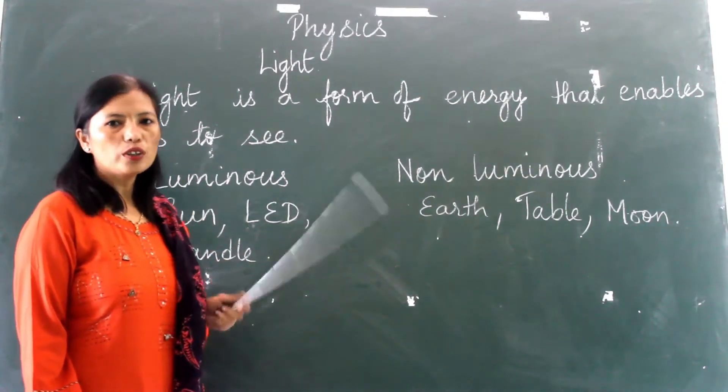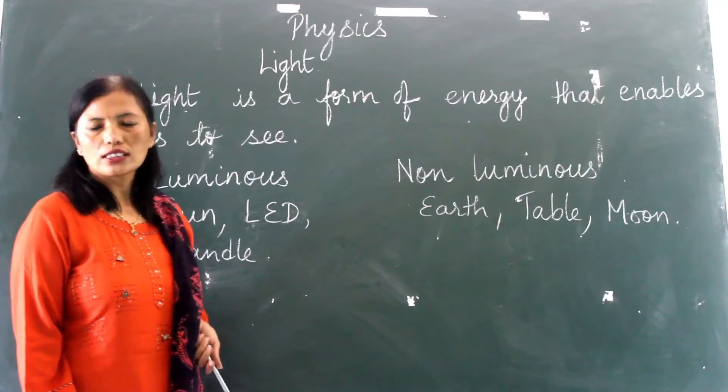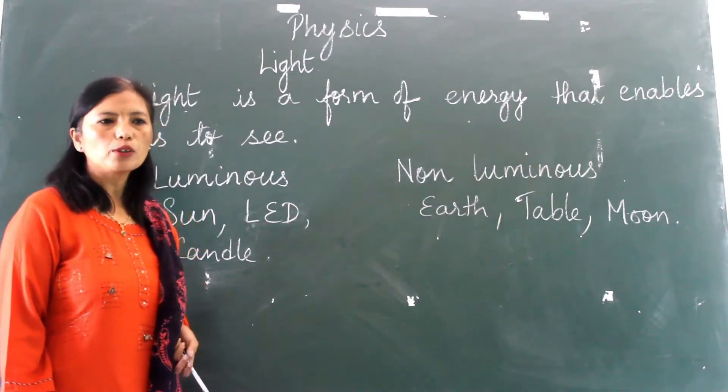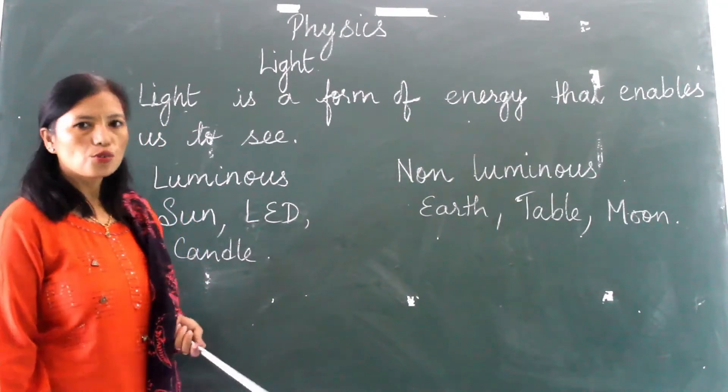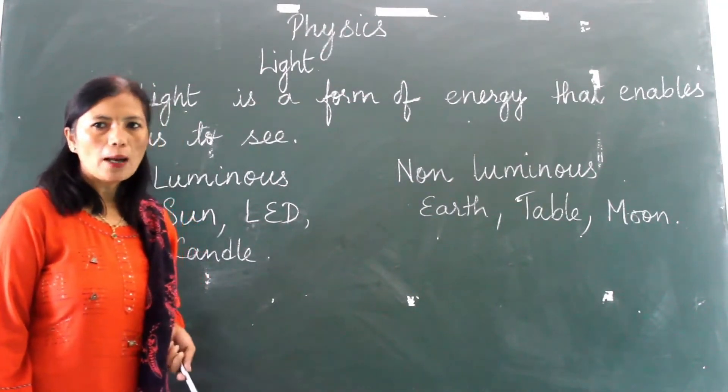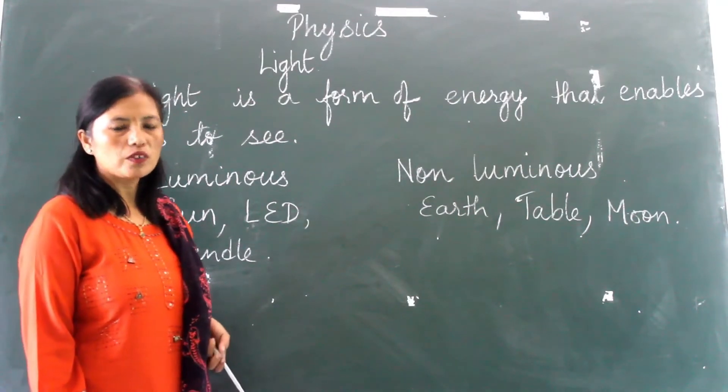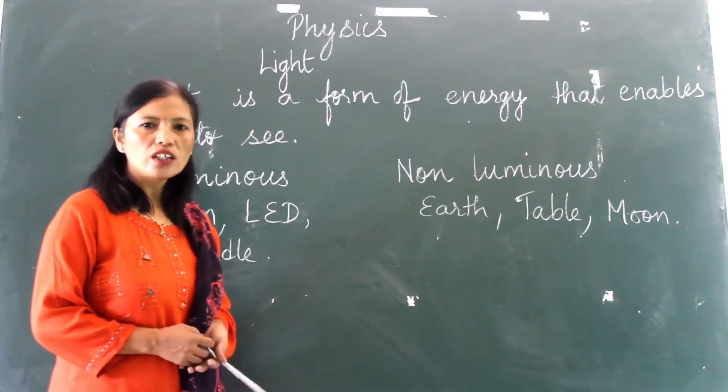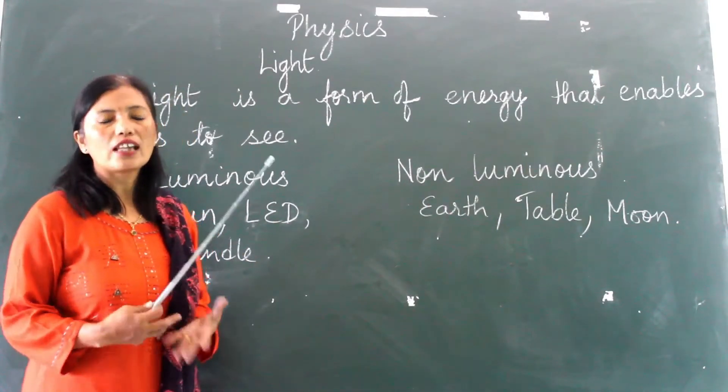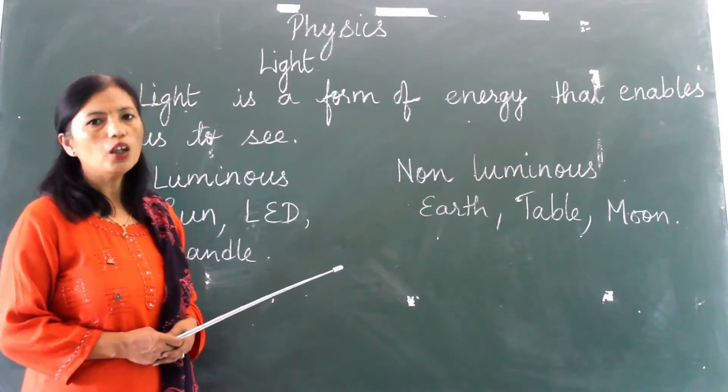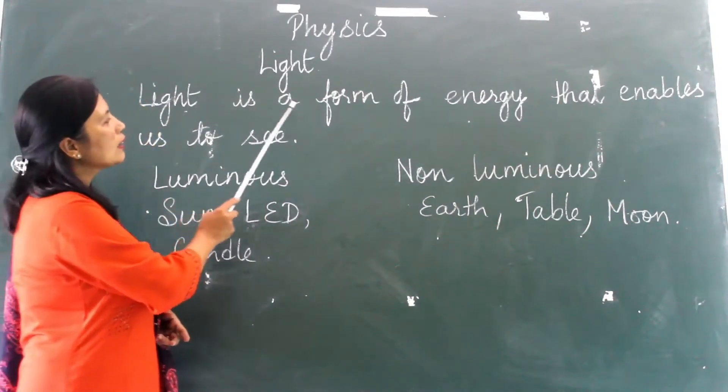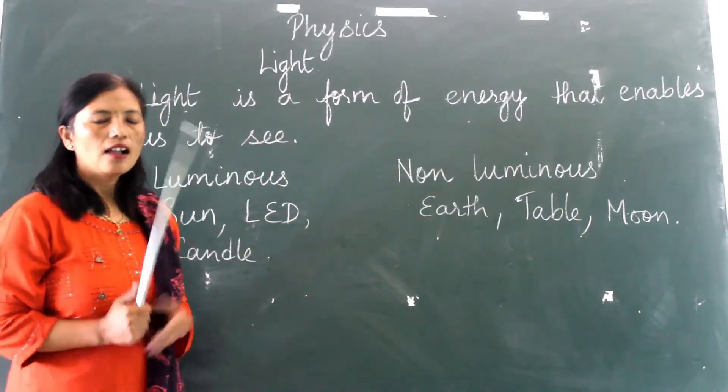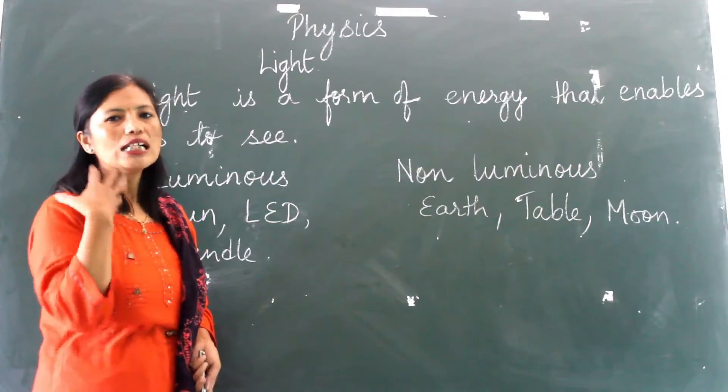We all know that without light we cannot see anything. If you enter a very dark room you will not be able to see anything. So we need light. When you switch on the bulb or tube or whatever it is, then suddenly the room becomes bright and we can see chairs, tables, or things that are kept in the room. So light is a form of energy that enables us to see. Light helps us to see the things.